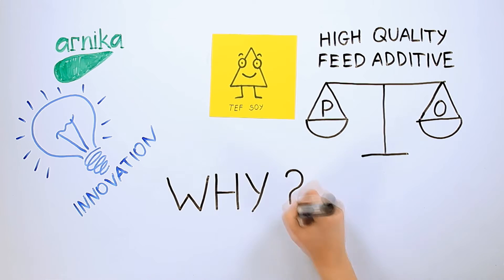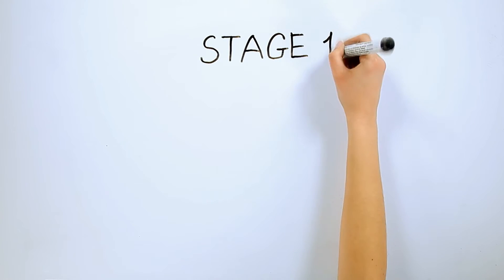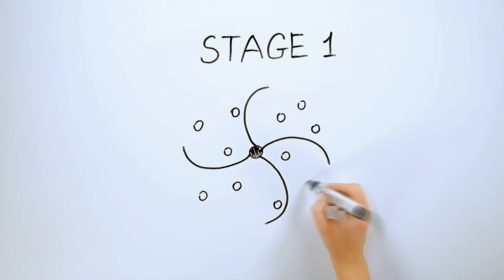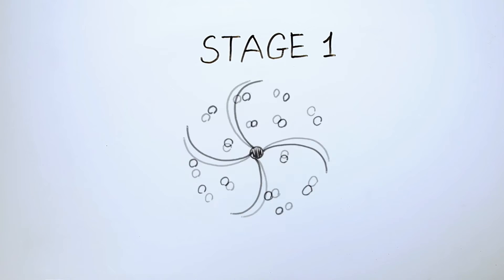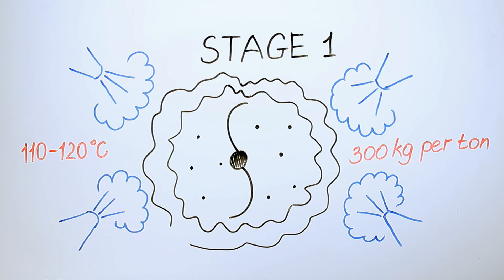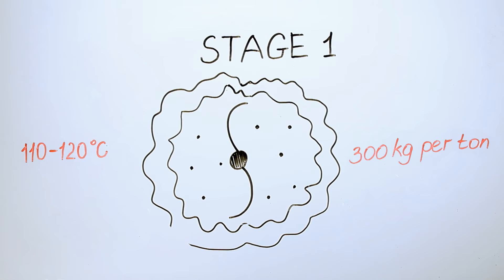Why TEF? Let's look at the stages of the production process. Stage 1: Soybeans are crushed, then placed in the mixer where due to their hygroscopic properties the soybeans absorb steam with the proportion of 300 kg of steam per 1 ton of product. Steam is fed at the temperature 110 to 120 degrees Celsius and deactivates all pathogenic fungi and microorganisms.